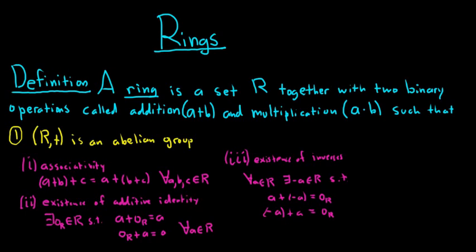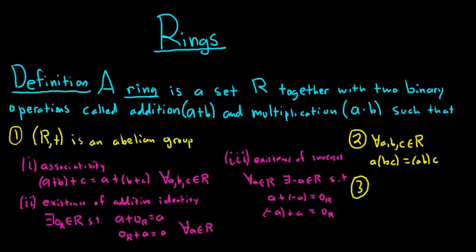The second condition in the definition of a ring is that multiplication is associative. For all a, b, c in R, (a times b) times c equals a times (b times c). This is associativity of multiplication.